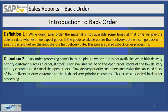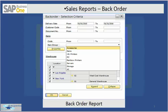When a high delivery priority customer places an order and the stock is not available in inventory, that goes into open order stocks or backorder. It depends on your business rapport with different customers. You may have one customer that is more important to you than another. In this process, if stock is not available, we go to the open order stocks of low delivery priority customers, cancel their open orders, and assign that stock to the high delivery priority customer. This process is called backorder processing based on customer priority.